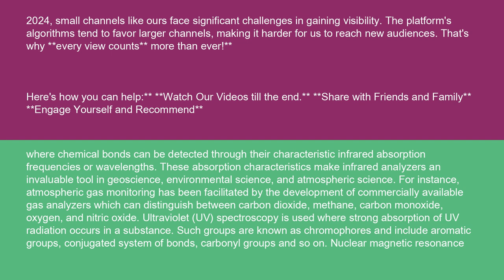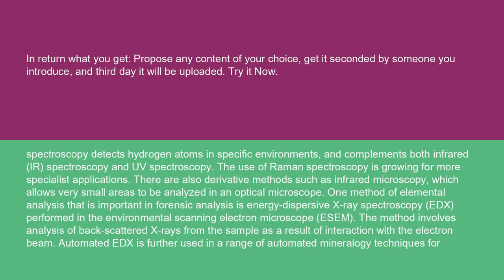Nuclear magnetic resonance spectroscopy detects hydrogen atoms in specific environments and complements both infrared IR spectroscopy and UV spectroscopy. The use of Raman spectroscopy is growing for more specialist applications. There are also derivative methods such as infrared microscopy, which allows very small areas to be analyzed in an optical microscope.